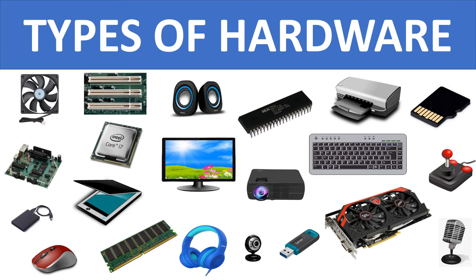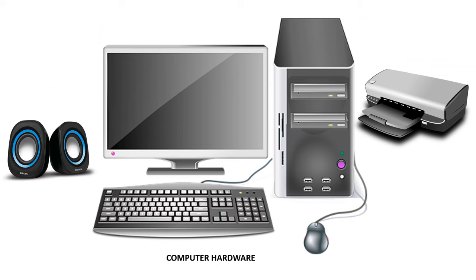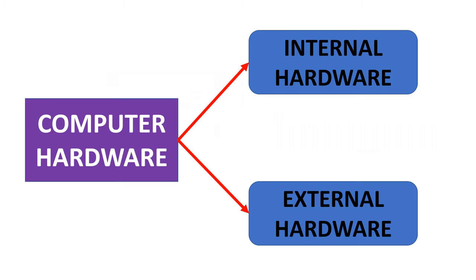Types of hardware. Computer hardware is the physical parts of the computer system. Computer hardware is divided into internal hardware and external hardware.